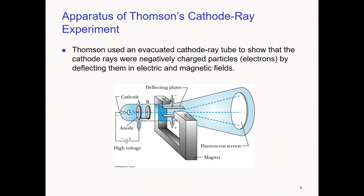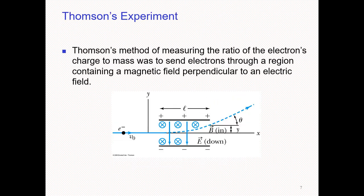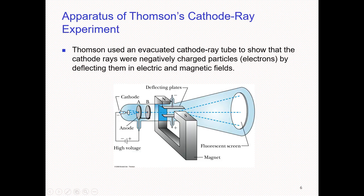The experiment was an attempt to understand the nature of cathode rays. Thomson's method to measure properties of the electron was to send electrons into regions containing both a magnetic field and an electric field.